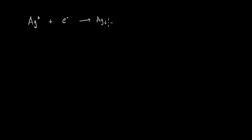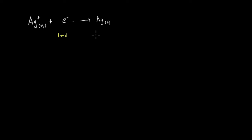Before looking at the electrochemical equivalent, let's examine the electrode where deposition is happening. Take silver as an example: silver ions gain electrons and silver is deposited. We can write this as 1 mole of silver ions reacting with 1 mole of electrons to give 1 mole of silver. Since the molar mass of silver is approximately 108 g/mol, for every mole of electrons, 108 grams of silver is deposited.